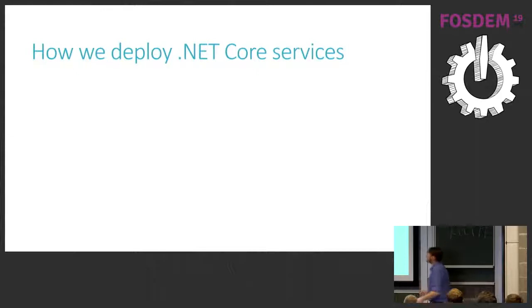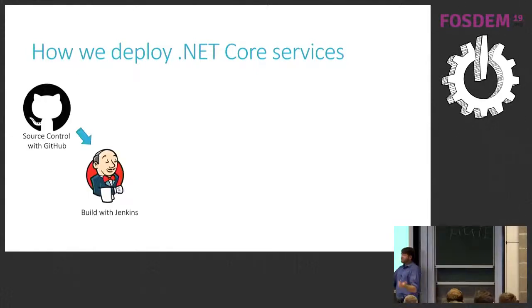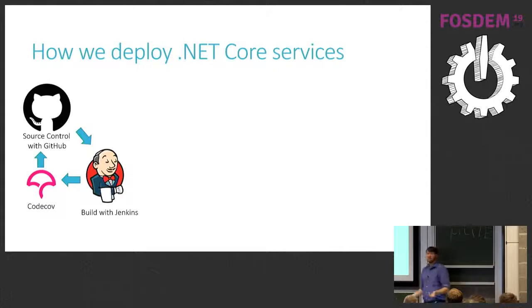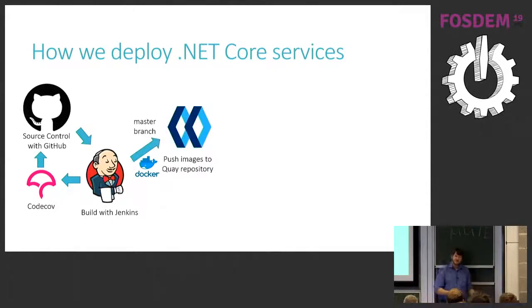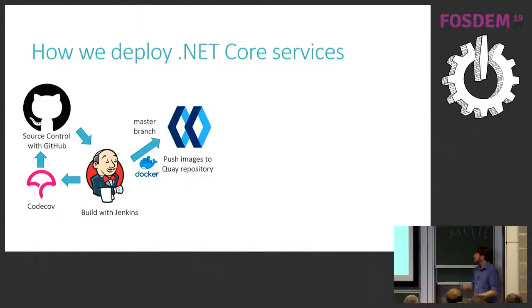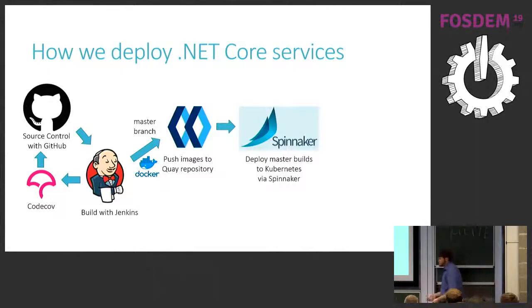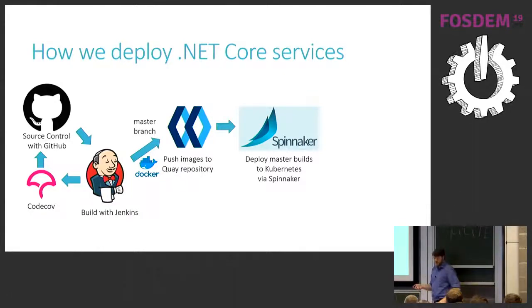Here's how we deploy .NET Core services: we use GitHub, deploy to Jenkins for the build, use CodeCov to check test coverage, deploy Docker images to Quay — a private Docker image repository — and use Spinnaker (from Netflix) to actually push our services out into Kubernetes.